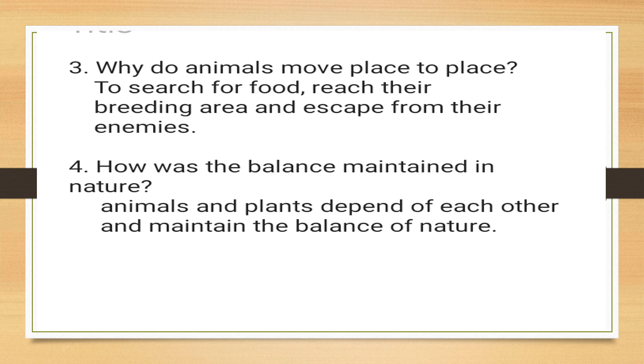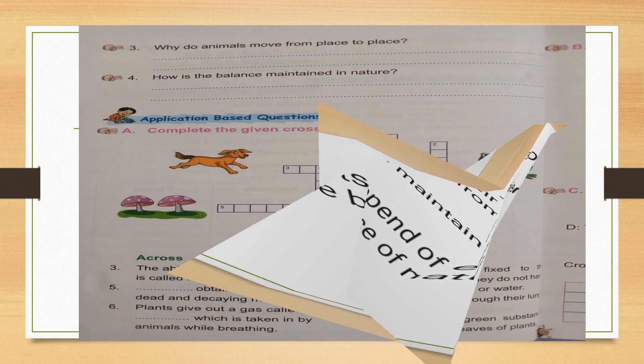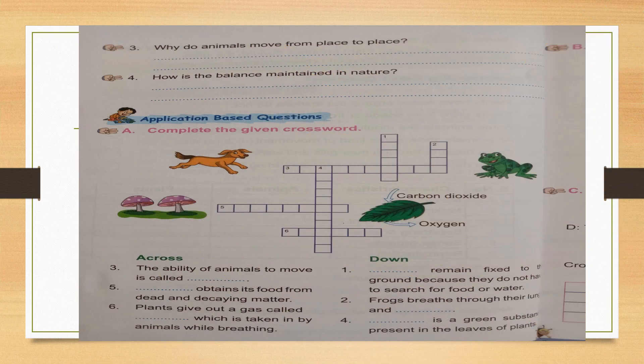Now in the same page, you have to complete the given crossword. Yes or no children? Do you have page number 12? We have done the third and fourth question answers. Now the application based question. Look at the book — don't look at the screen. Listen nicely. Complete the given crossword — this is very interesting.